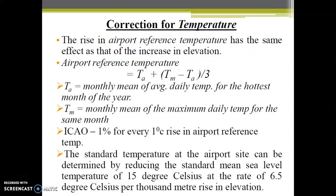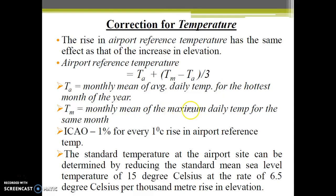For the temperature correction: the rise in airport reference temperature has the same effect as an increase in elevation — as temperature increases, air density decreases, so the aircraft must cover a longer distance to become airborne. The airport reference temperature is calculated using: T_A, the monthly mean of average daily temperature for the hottest month of the year, and T_M, the monthly mean of maximum daily temperature for the same month.